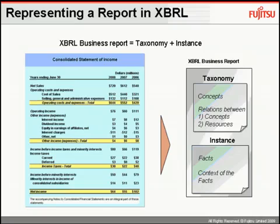The instance document — the one being submitted to the SEC — has company-specific data relating to the concepts in the taxonomy. In this case, the value of sales or SG&A are considered facts and go in the instance document. Other information that offers context to these facts, such as the period for which the facts apply, is also found in the instance document. Note that the instance document just contains the concept values, not how to relate them — the relationships between concepts and how to define them are in the taxonomy.